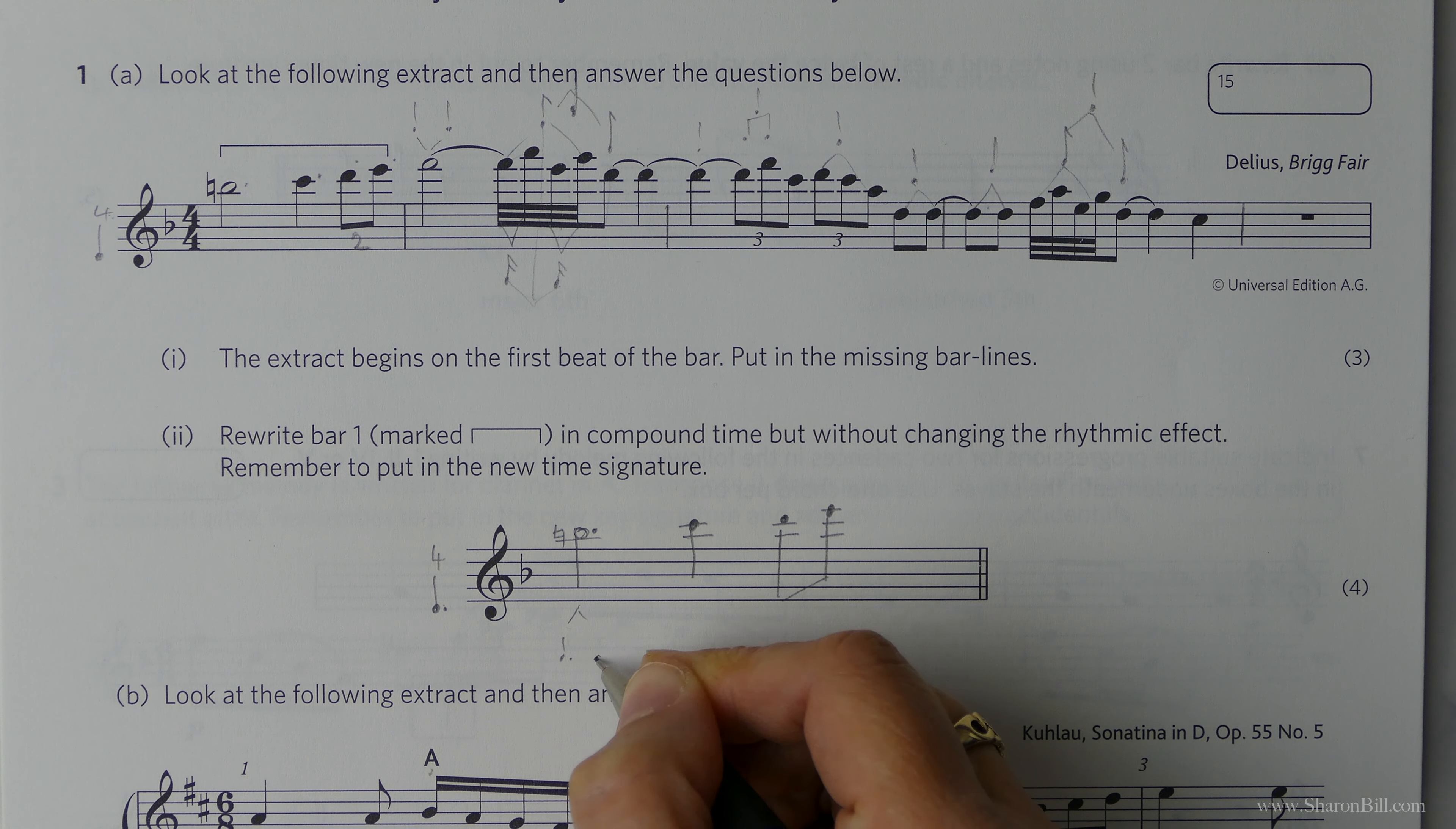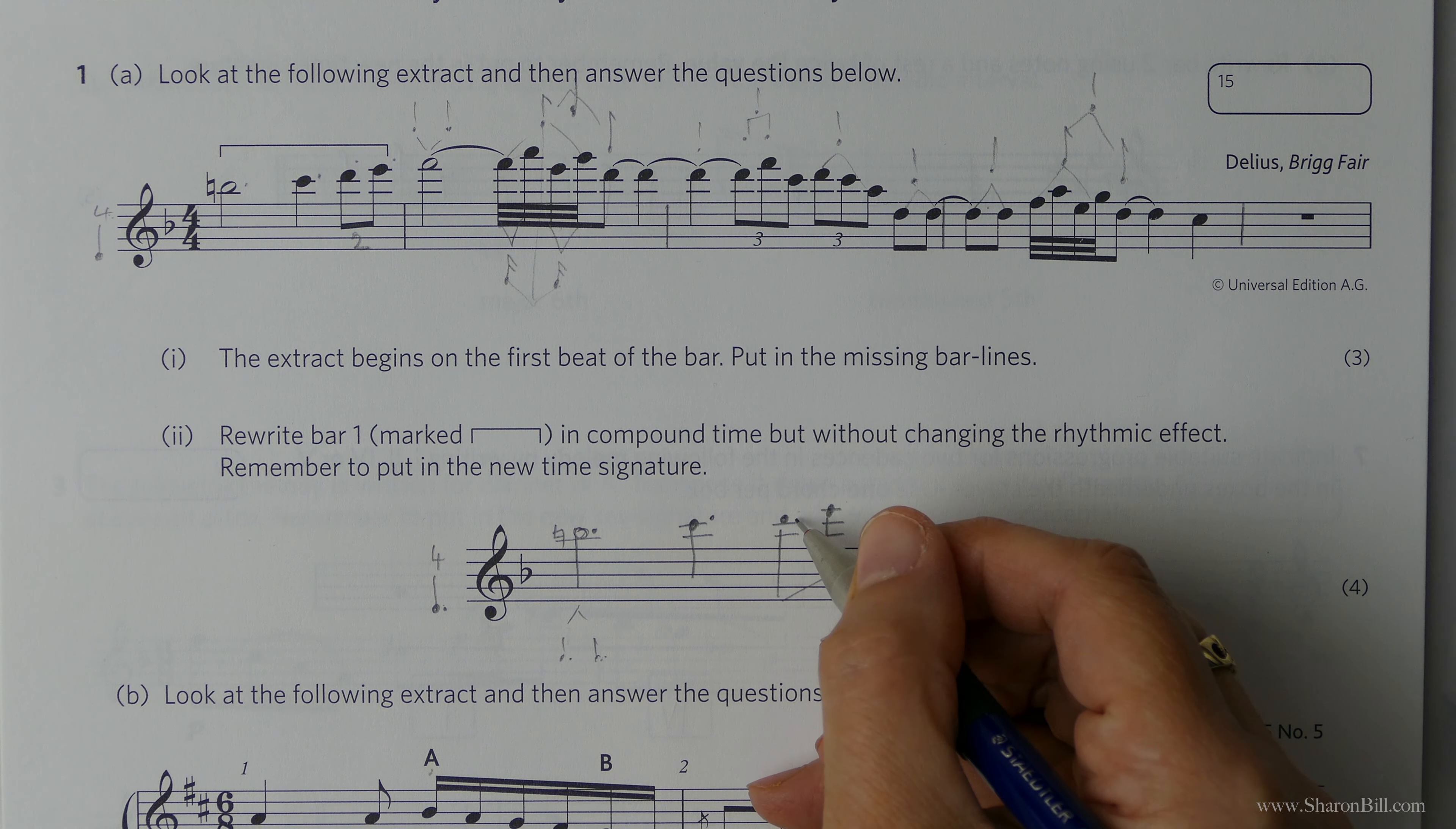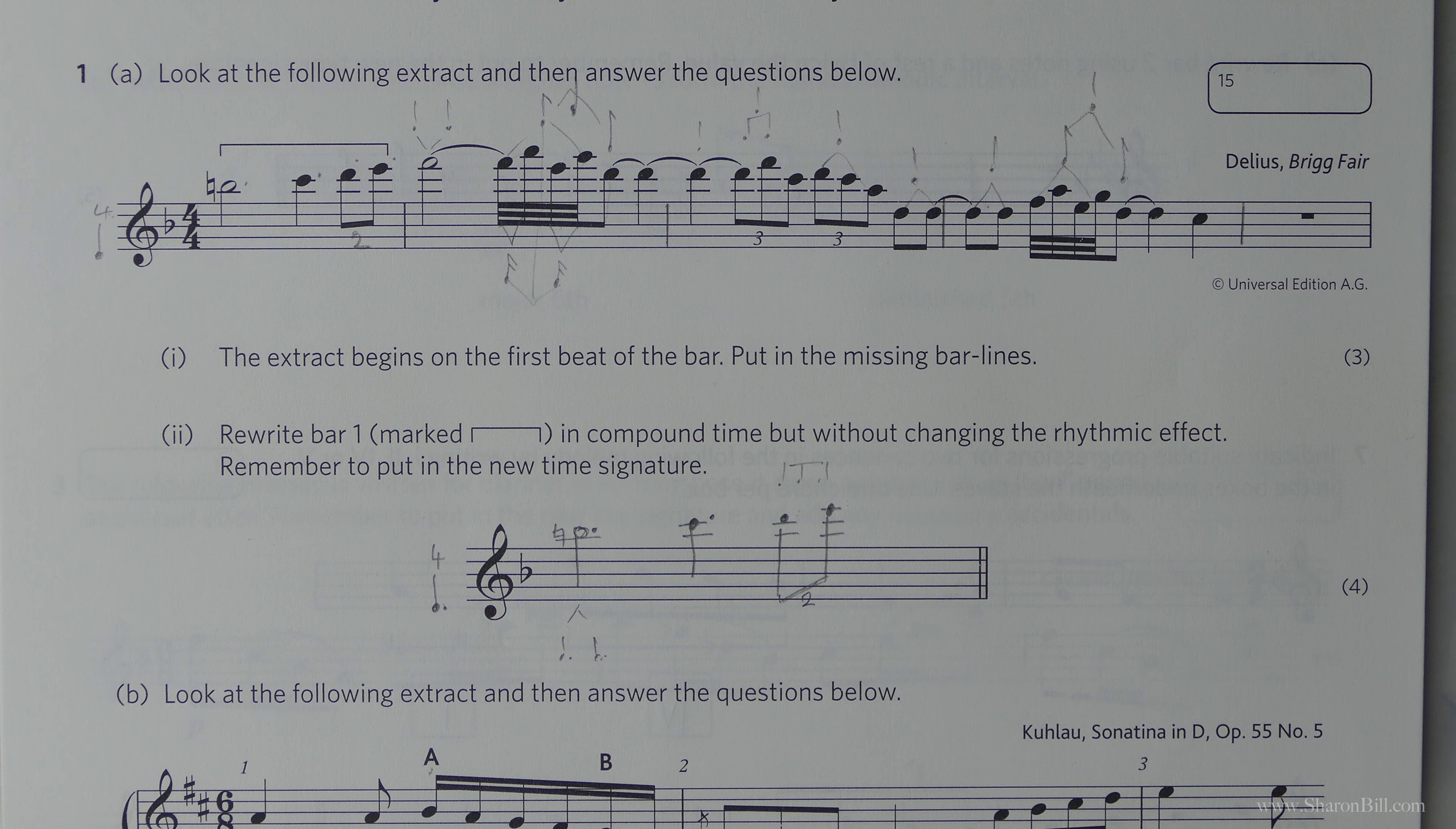So then, we can put a dot there. So that's now worth 2 dotted crotchets, 2 dotted quarter notes. We put a dot here. And then we could either put 2 dots, like a dot here and a dot here, or we could just use a duplet sign and say 2 in the time of 3. So that's effectively saying we're using the same time as 3 quaver, 3 eighth notes per bar. So that's soon done, actually.